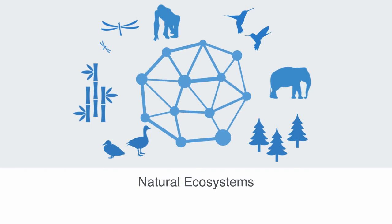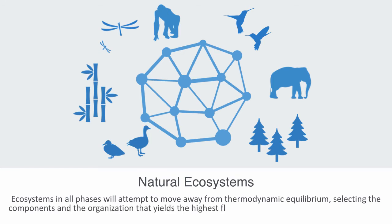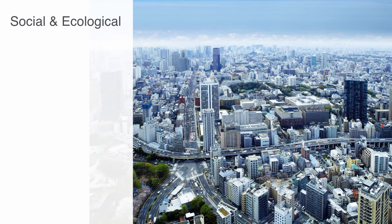Ecosystems in all phases will attempt to move away from thermodynamic equilibrium, selecting the components and the organization that yields the maximum flux of useful energy throughout the system and the most energy stored in the system, corresponding to the highest level of what's called ascendancy. The social component is what we might call an economy, consisting of both social institutions and technology infrastructure — what we can call a socio-technical system.